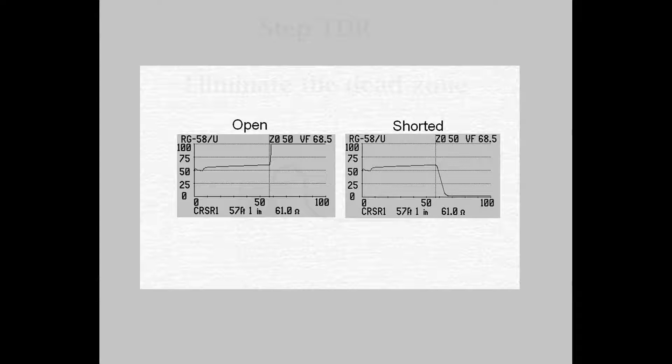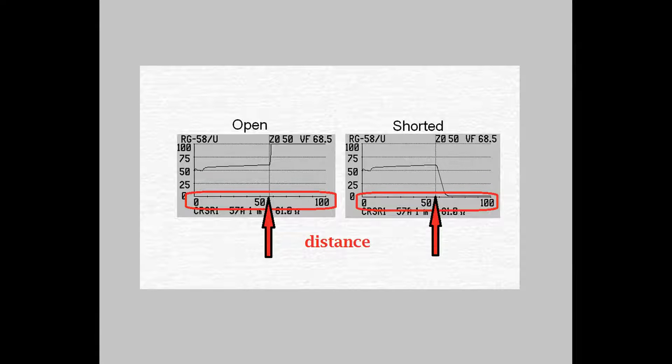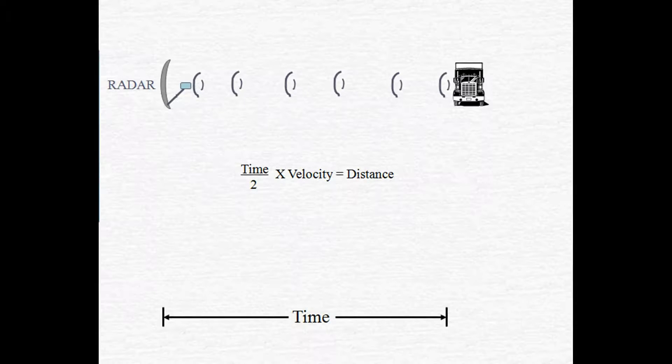So when looking at the TDR screen, the calculated distance of your fault will be displayed at the bottom of the screen. Speaking of distance, let's go back and take another look at how we calculated it. We timed how long it would take a radio wave traveling at the speed of light to make it from our target back to our receiver. Our velocity was the speed of light. Now here's the catch. We've got a little problem. When your electrical impulse is traveling down a wire, it does not travel at the speed of light.